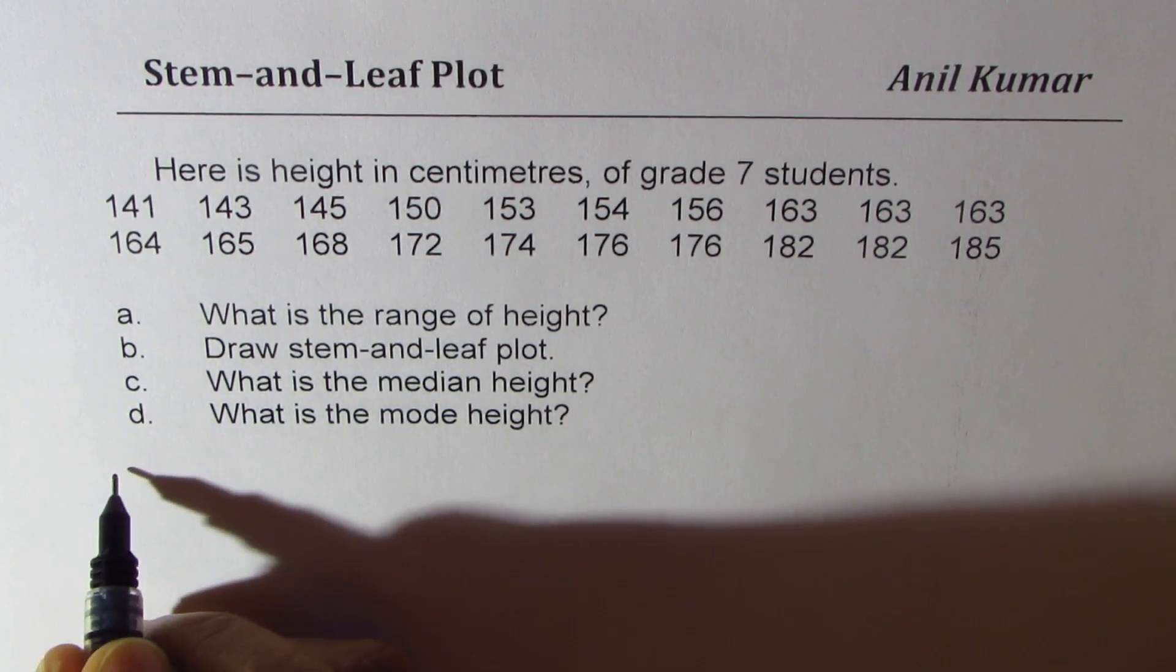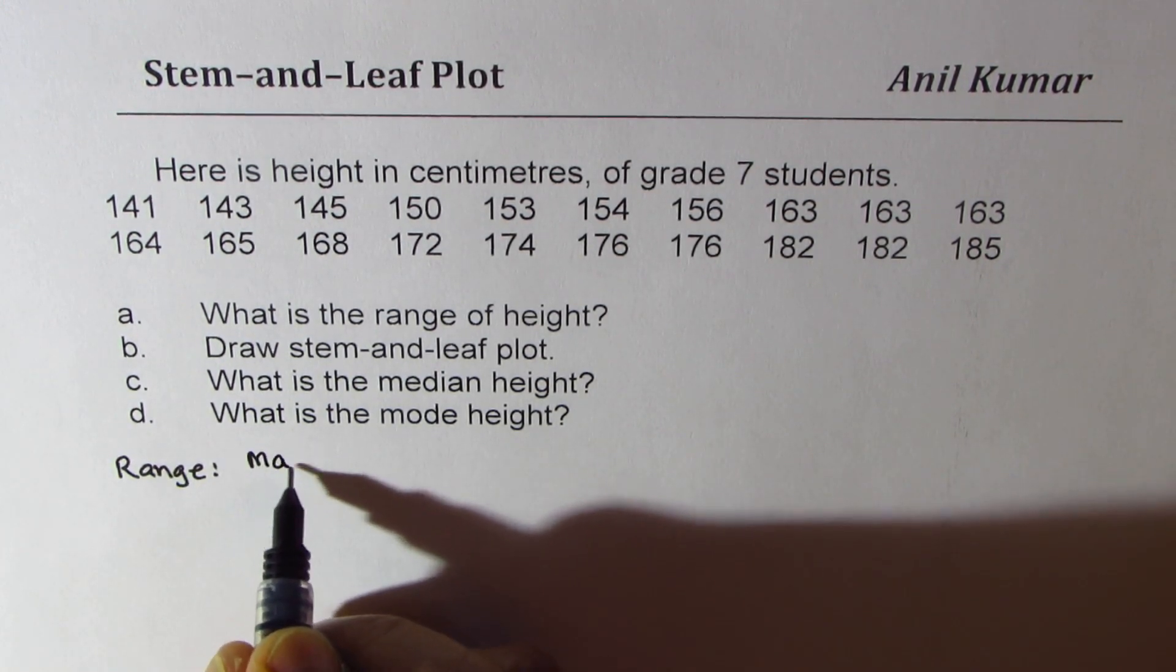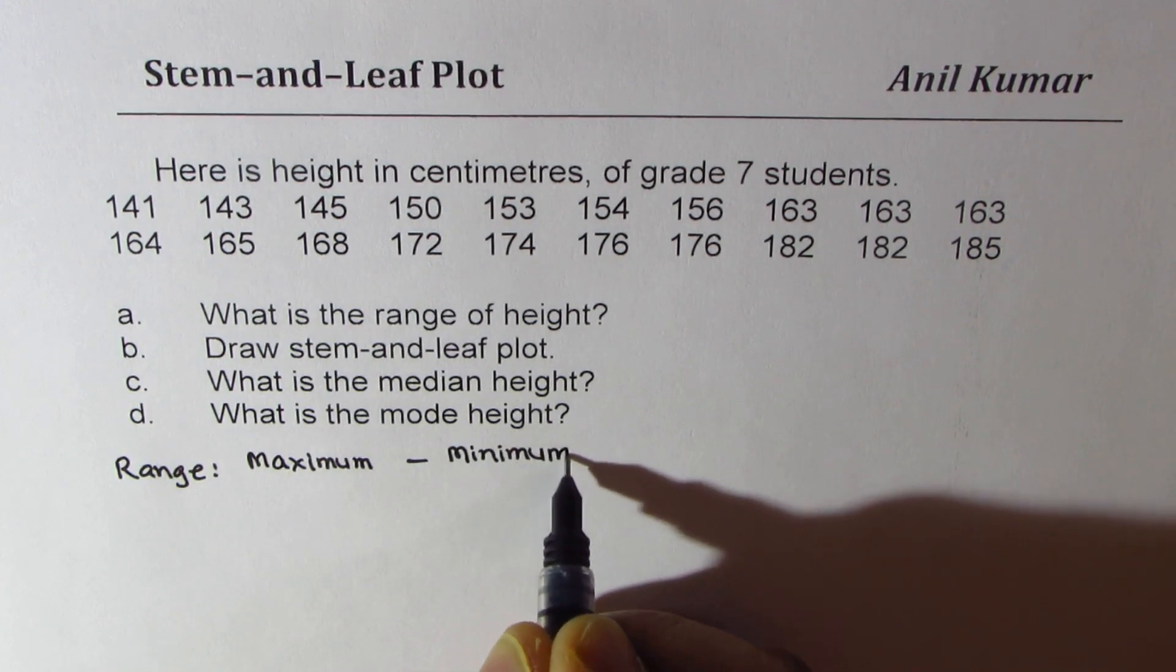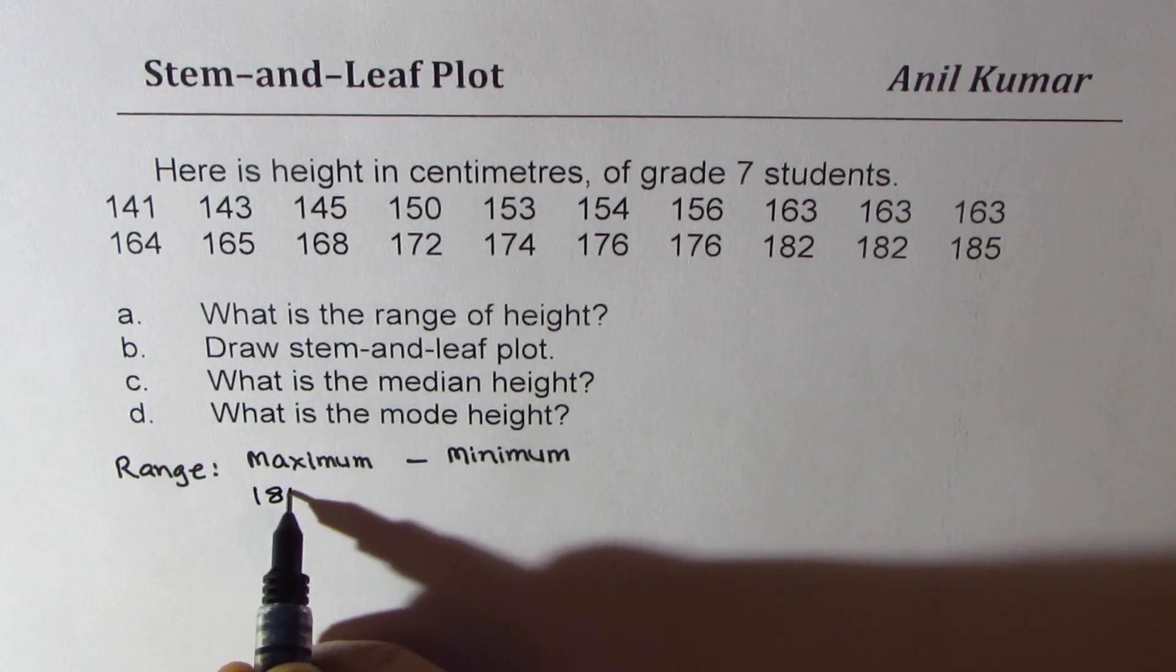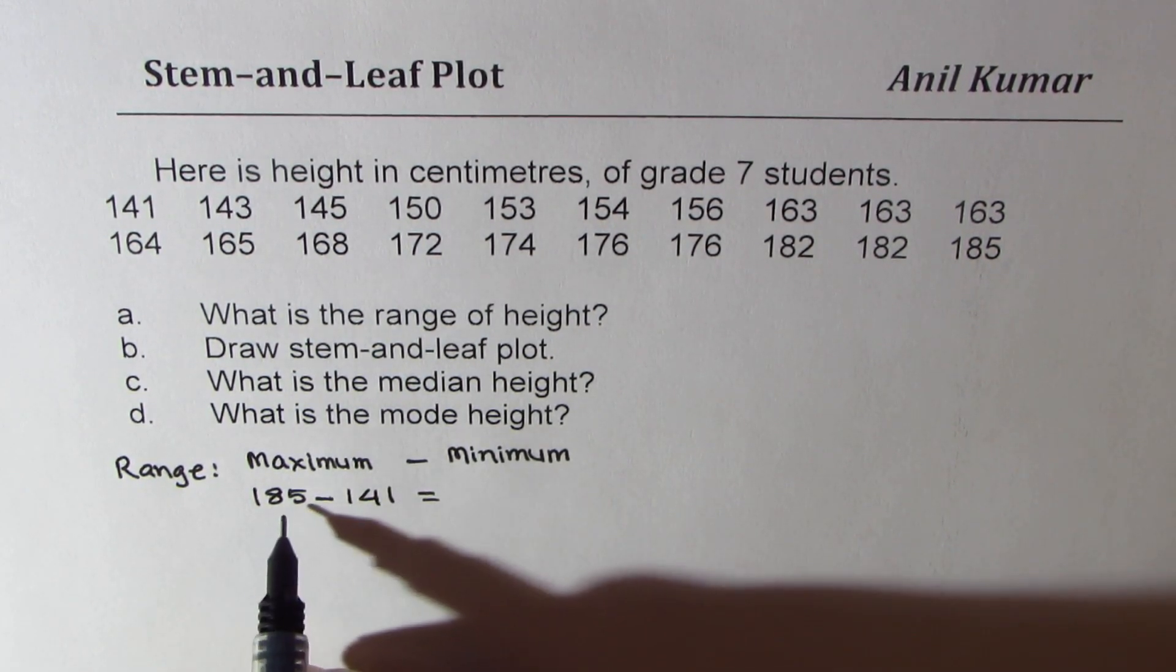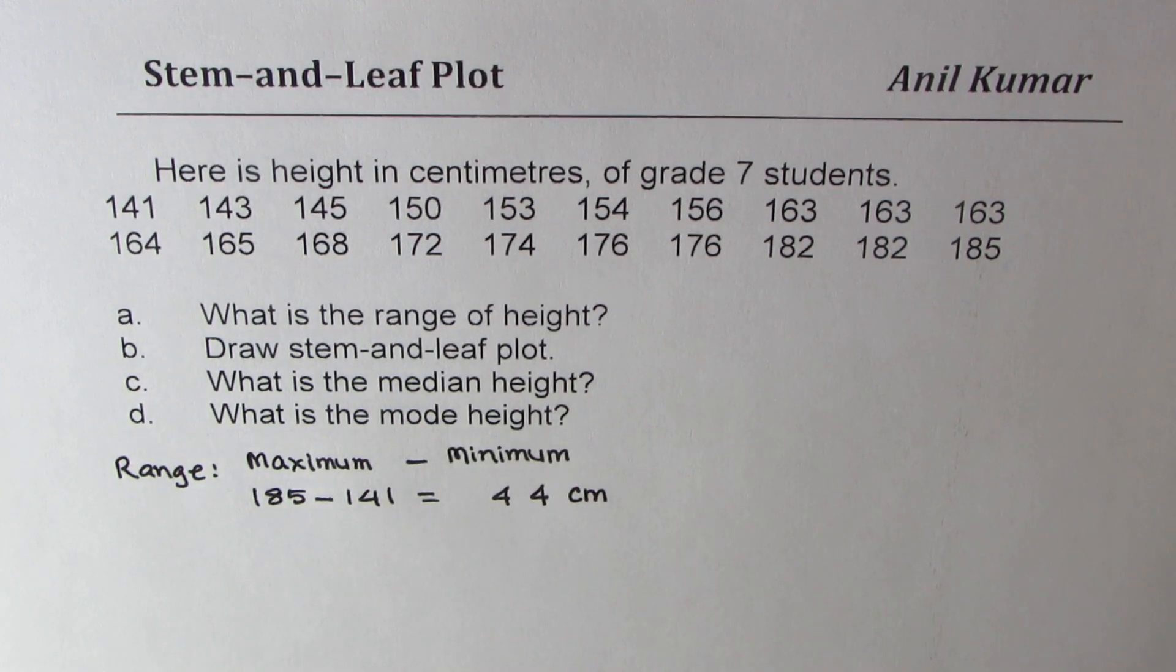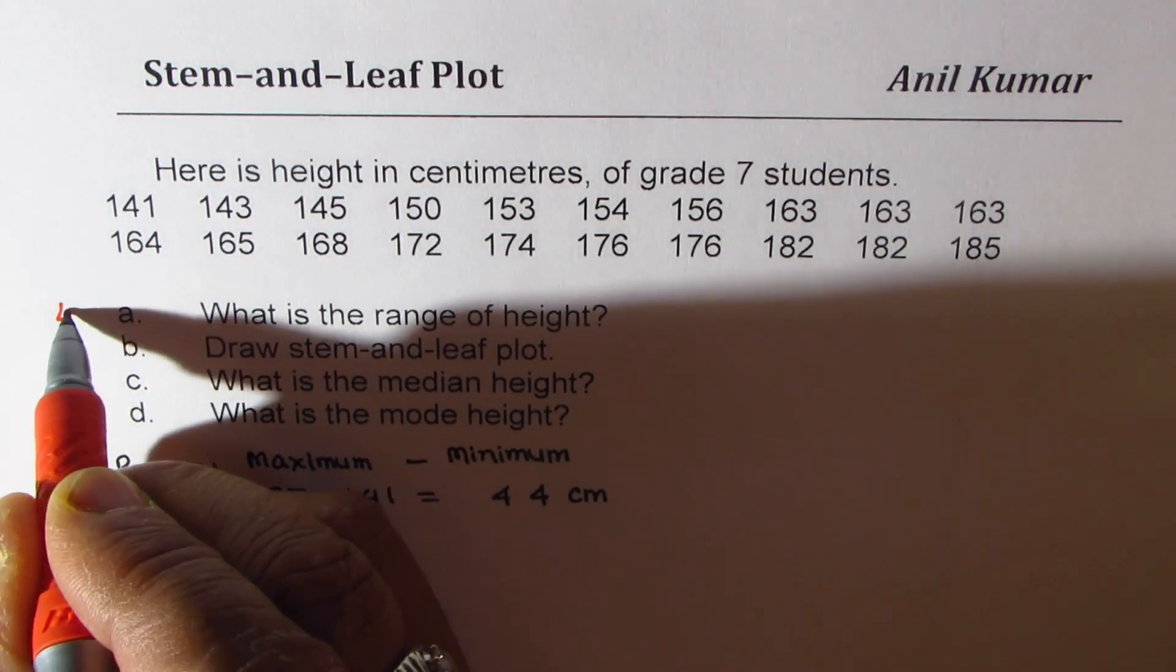First thing is range. So what is range? Range basically is the difference of maximum and minimum. So do maximum minus minimum to get range. If you look at this data, the maximum is 185, so we'll do 185 take away 141. So the difference will be 44. 44 centimeters is the range for the data.